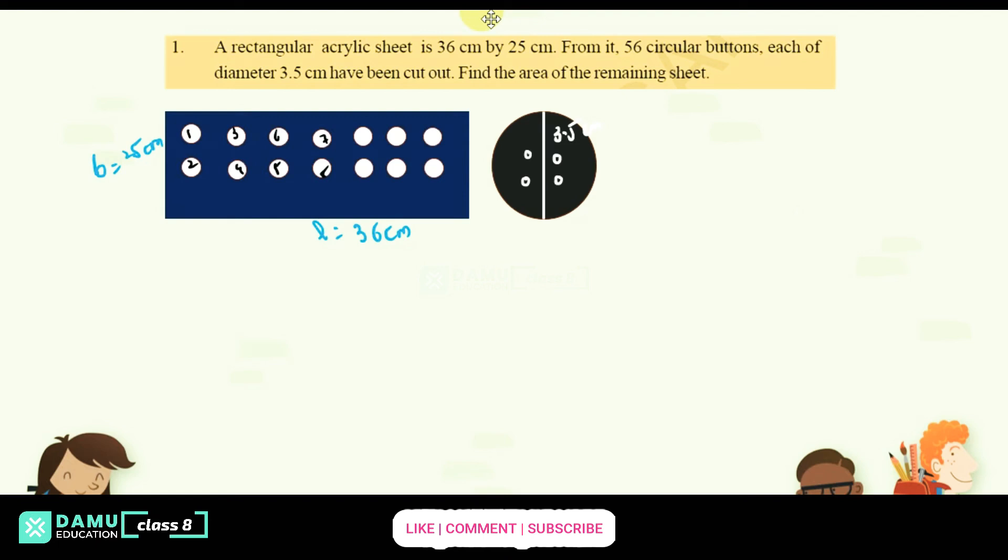So actually you can take one method: find the area of each circle, that is circle button, then you find the area for remaining sheet.